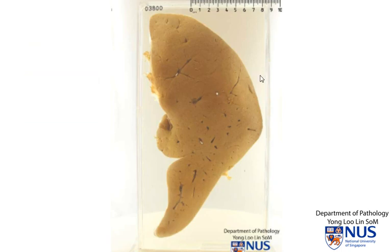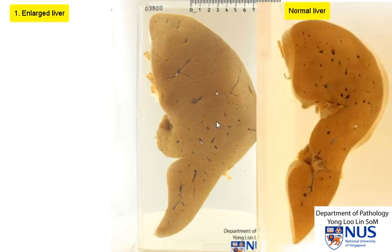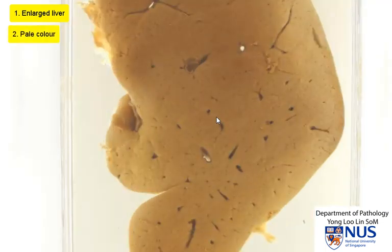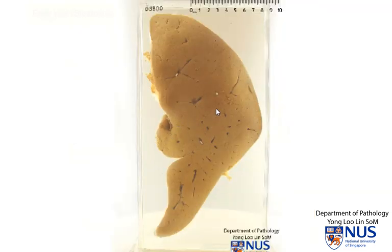There are two things that are abnormal in this liver. First of all, the liver is enlarged. It is quite difficult to really appreciate the size looking at this specimen. However, there is a clue: if you look at the usually sharp points or edges, they're a little bit more blunted here, which gives a hint that the liver is enlarged. The other gross abnormality is the color — the liver is rather pale, and in a fresher specimen it would actually appear a little bit yellowish. So this is an example of fatty liver, fatty change, or steatosis.